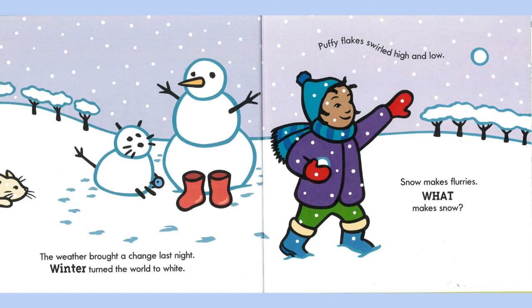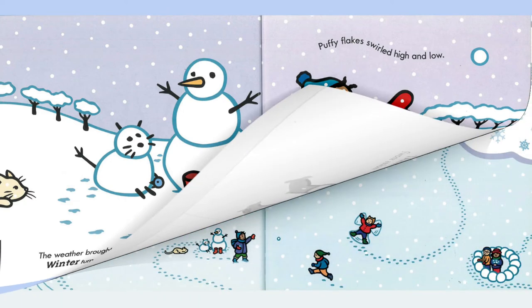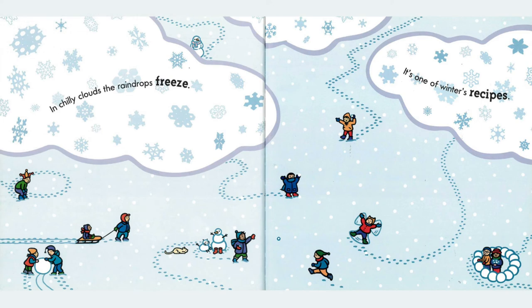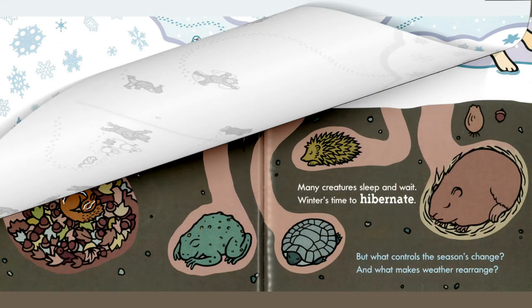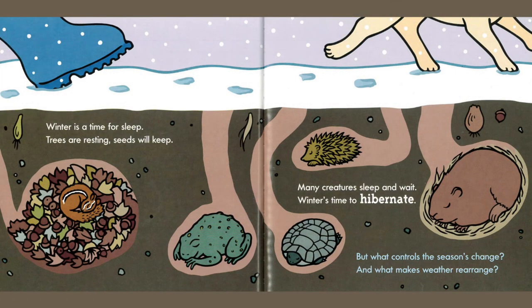Puffy flakes swirled high and low. Snow makes flurries — what makes snow? In chilly clouds the raindrops freeze; it's one of winter's recipes. Winter is a time for sleep. Trees are resting, seeds will keep.